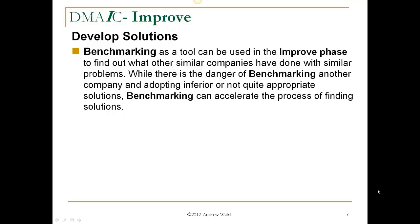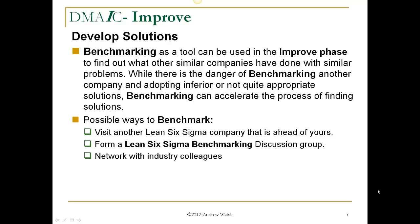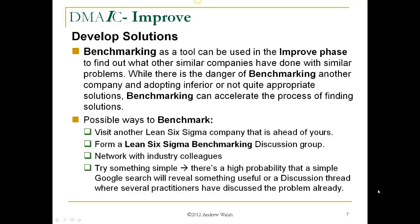Benchmarking as a tool can be used in the improve phase to find out what other similar companies have done with similar problems. While there is a danger of benchmarking another company and adopting inferior or not quite appropriate solutions, benchmarking can accelerate the process of finding good solutions, or at least generate another list. Possible ways to benchmark: visit another Lean Six Sigma company that's been implementing ahead of you; form a Lean Six Sigma benchmarking discussion group; network with industry colleagues. There's a high probability that a simple Google search will reveal something useful or a discussion thread where several practitioners have already discussed the problem.